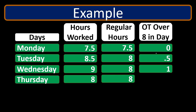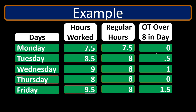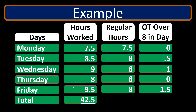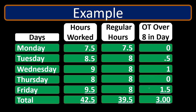Thursday with eight hours is all regular pay and no overtime. On Friday with 9.5 hours total, eight hours are regular and 1.5 hours are overtime. The totals are: 7.5 + 8.5 + 9 + 8 + 9.5 = 42.5 total hours. Regular pay is 7.5 + 8 + 8 + 8 + 8 = 39.5 hours, and overtime is 0.5 + 1 + 1.5 = 3 hours.